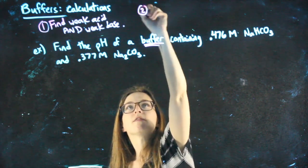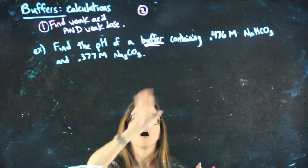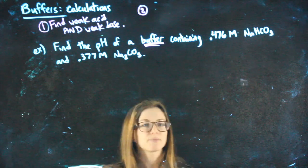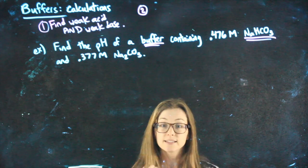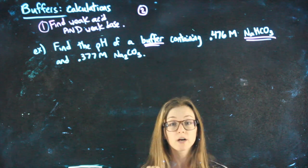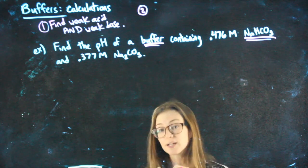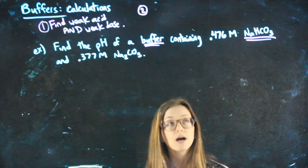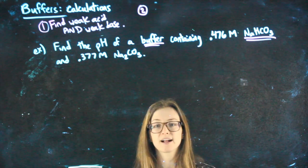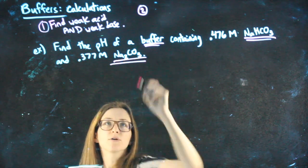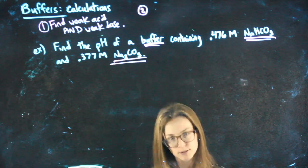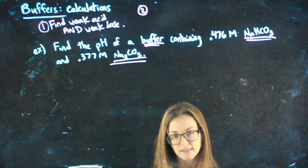Then we'll do the actual math. So NaHCO3, I'm going to ask myself, is that something weak already? No, it's a salt. If it's a salt, I have to break it down and find the weak thing hiding in it. And Na2CO3 is also a salt, so I'm going to have to break that down to find the weak thing that's hiding in it.